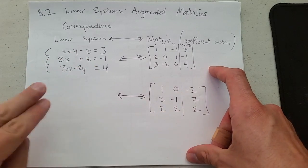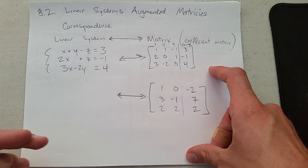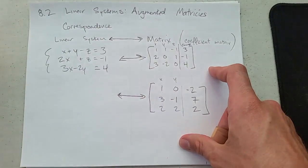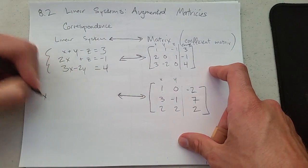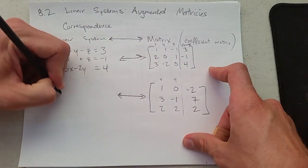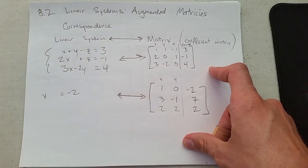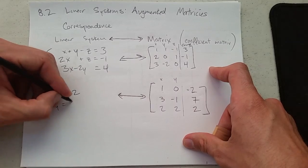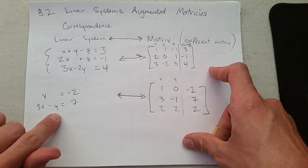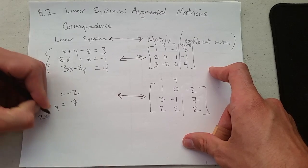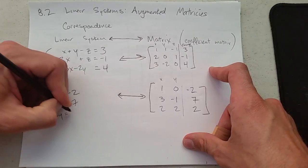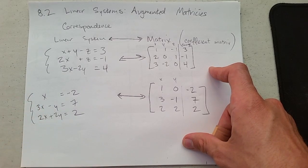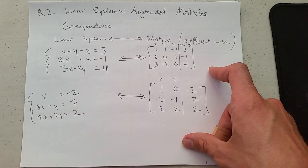Now we're going to take this matrix and write down what linear system does it represent. So I need to pick variables. I'll go with x and y. So I have x. I could write plus zero y. I could also be lazy and skip it. Now we have 3x minus 1y equals 7, and I can skip writing the minus 1. We have 2x plus 2y equals 2. And just put that curly bracket in there. So here's our linear system that corresponds to that matrix.